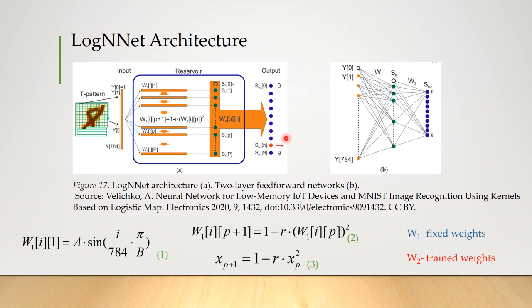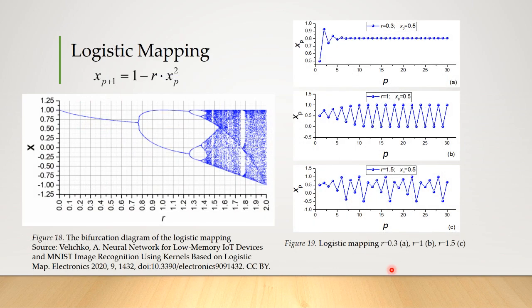LogNNet's architecture is easy to implement. What is the magic of the logistic mapping? The logistic mapping is widely known as the simplest model that demonstrates the transition to chaotic behavior through a sequence of period doubling bifurcations. A visualization of the transition process to chaos is shown in the figure.